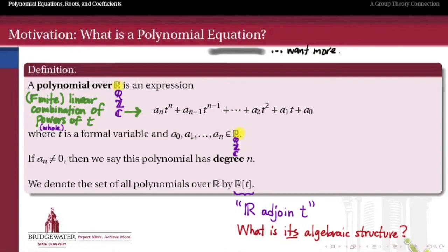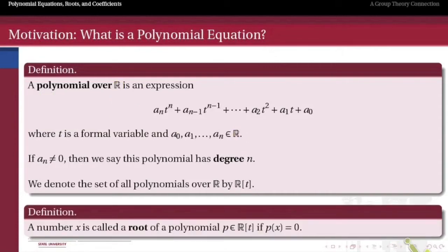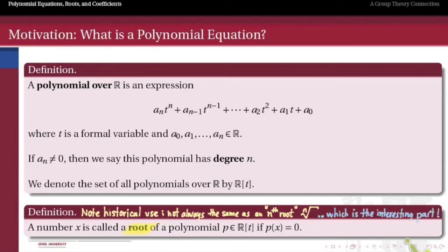Those polynomials are just expressions — there's no equal sign, so there's nothing to solve for. We want to take the next step and think about equations, not just expressions. The canonical way to do that is to set a polynomial equal to zero. When we take a polynomial and set it equal to zero, we call a number a root of that polynomial if substituting that number into the polynomial satisfies p of x equals zero. Note the historical use of the word 'root' here — typically in mathematics, 'root' brings to mind an nth root like a square root or cube root. But in general, 'root' just means the solution of a polynomial equation that makes it equal to zero — and that need not be the same as a simple nth root. In fact, that's the interesting question of the semester: not every polynomial has a solution that can be built out of nth roots.